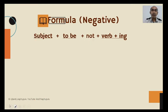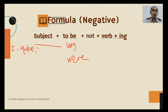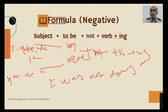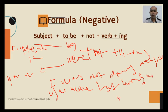Next, for a negative statement or sentence — same 'to be': was, were. 'Was' is used with I, he, she, it. 'Were' is used with you, we, they — plus 'not' plus verb-ing. Example: I was not doing anything. Or: You were not living in Singapore. Okay, that's for the negative form.